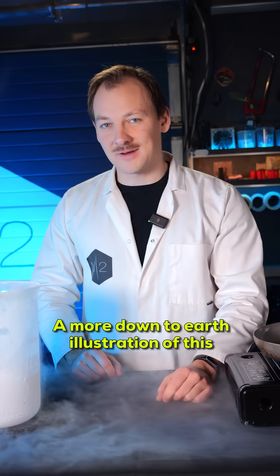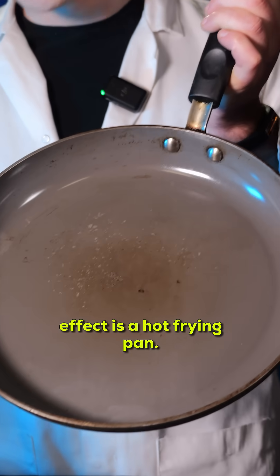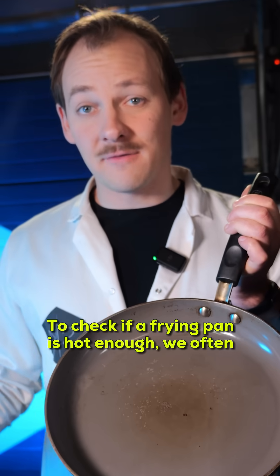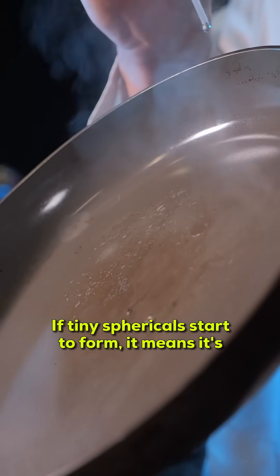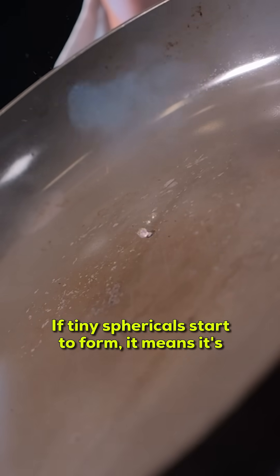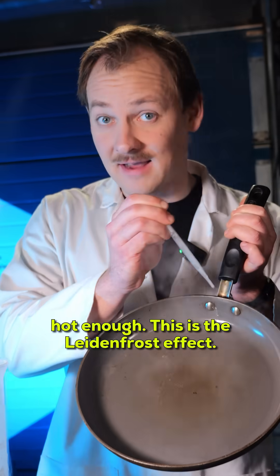A more down-to-earth illustration of this effect is a hot frying pan. To check if a frying pan is hot enough, we often pour a little bit of water on it. If tiny sphericals start to form, it means it's hot enough. This is the Leidenfrost effect.